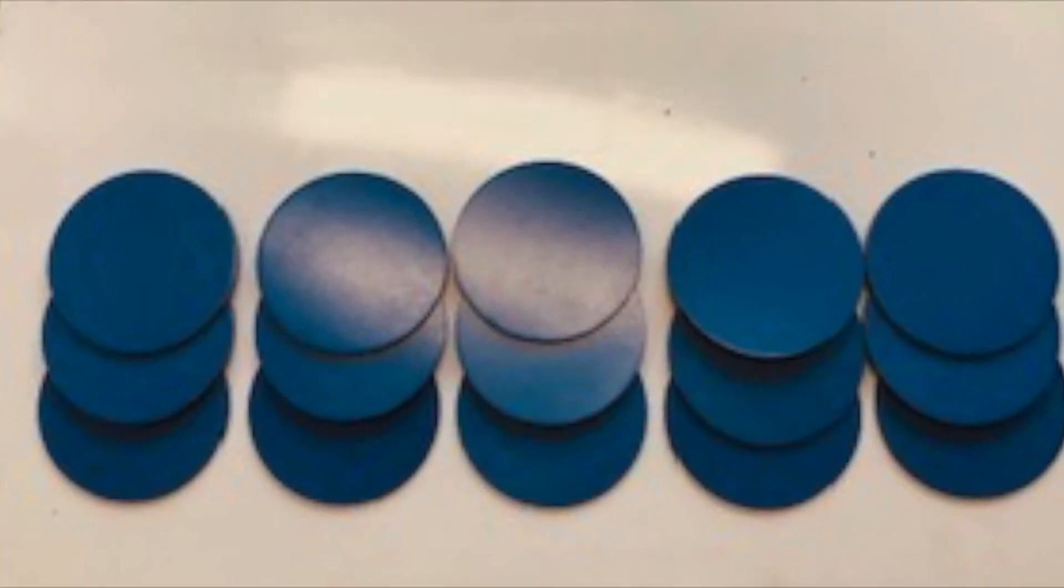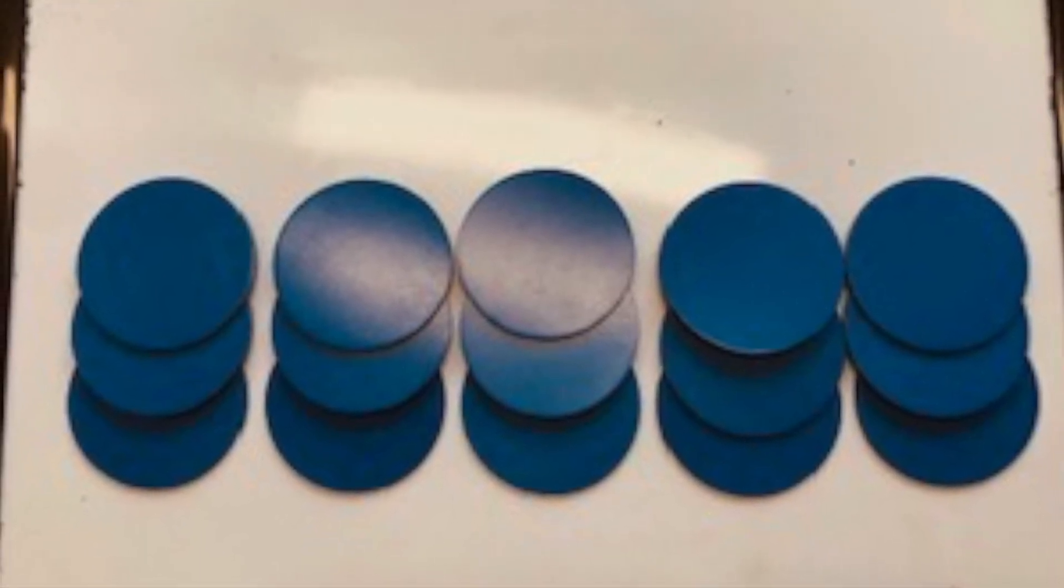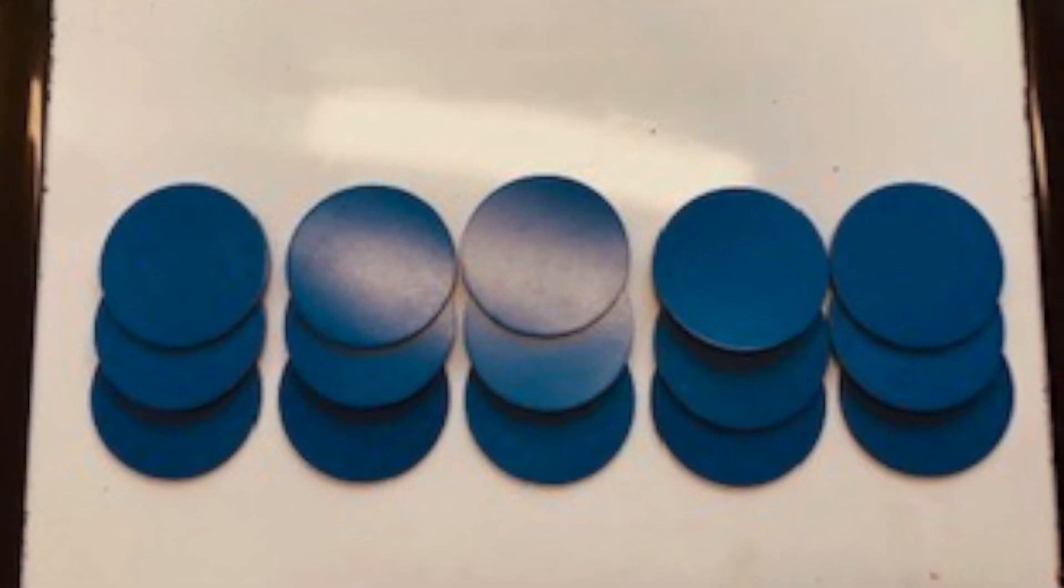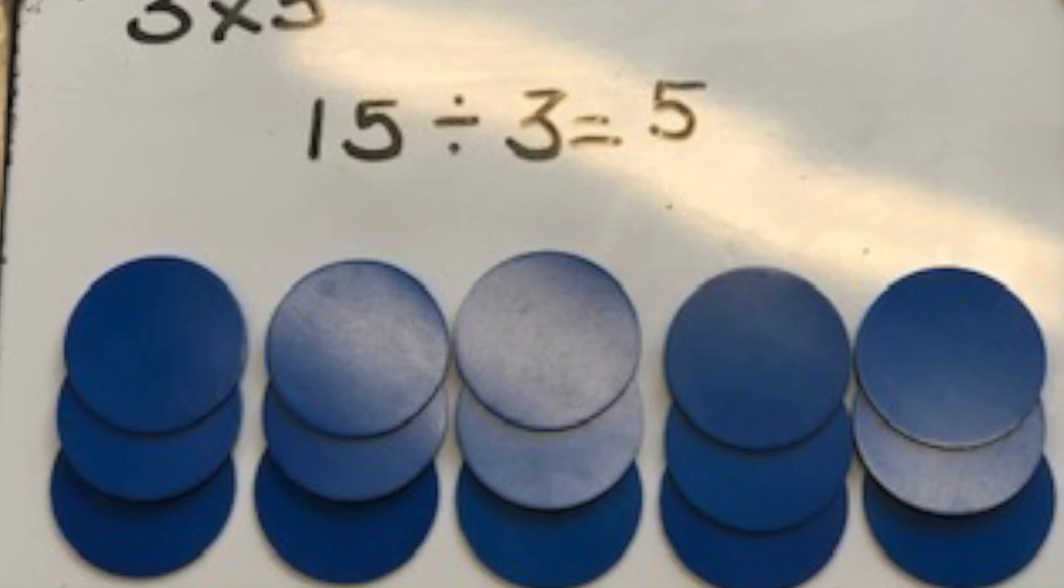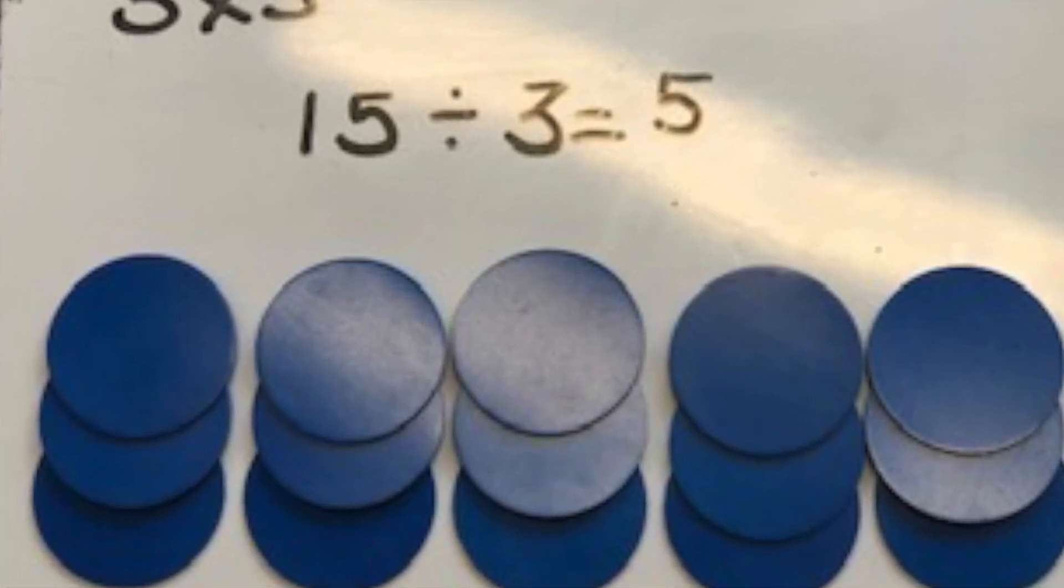I know that I can work out my division facts also. I can group them into piles. Start with 15 counters. If I divide them into piles of 3, how many piles of 3 do I have? It means I have 5 piles, so 15 divided by 3 equals 5.